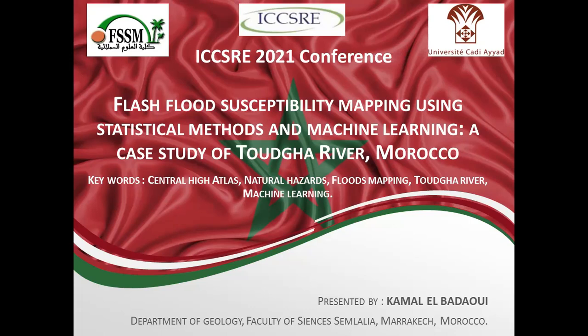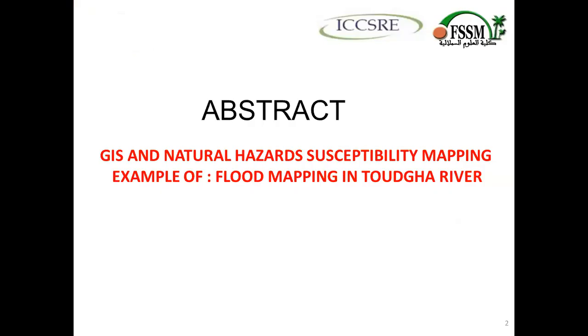The keywords are: Central High Atlas, natural hazards, flood mapping, Tudor River, and machine learning.